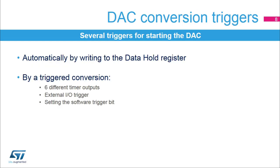DAC output conversion is started by writing to the data hold register by software. Six different timer outputs, an external I/O, or software can trigger the DAC conversion.